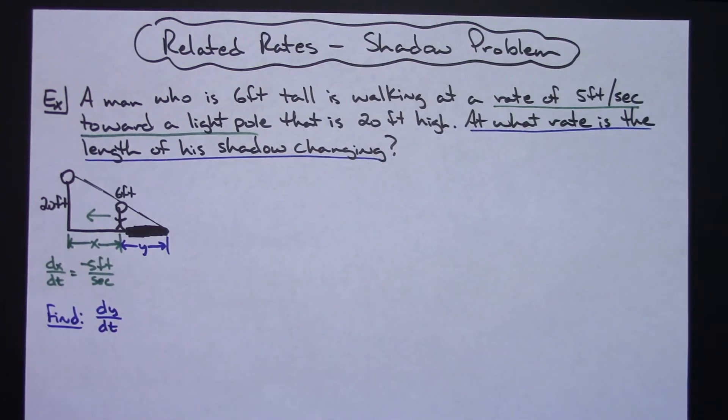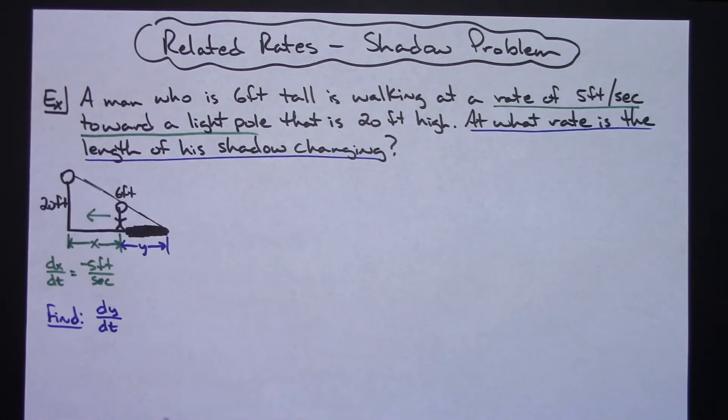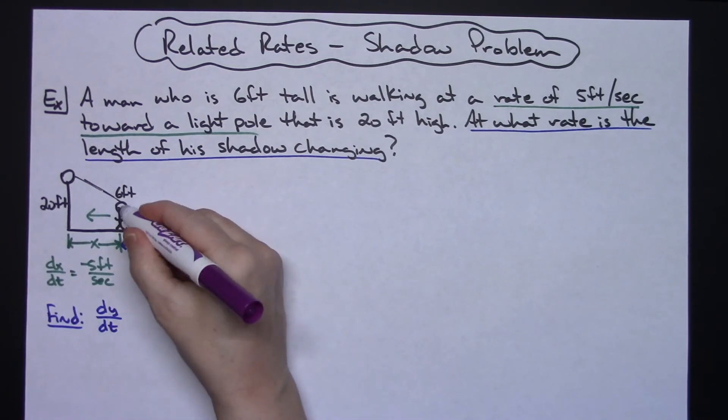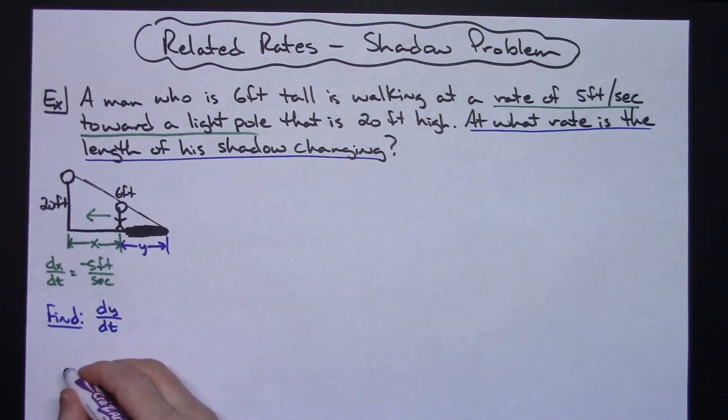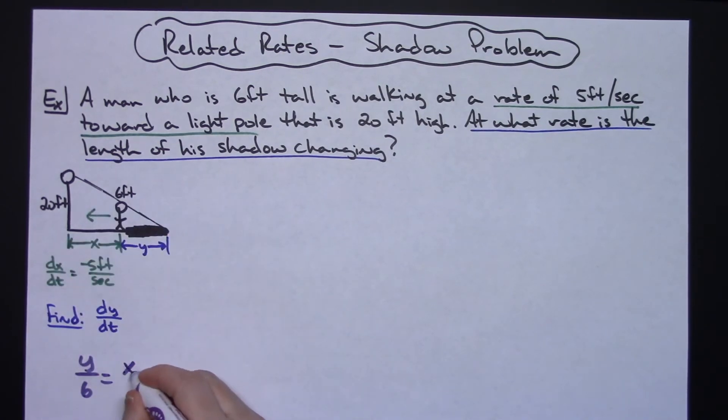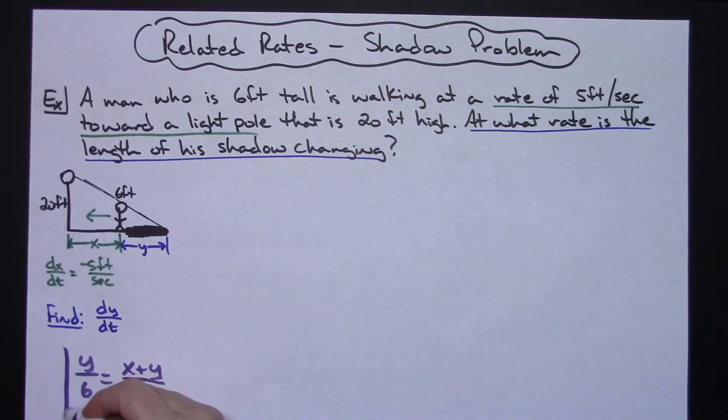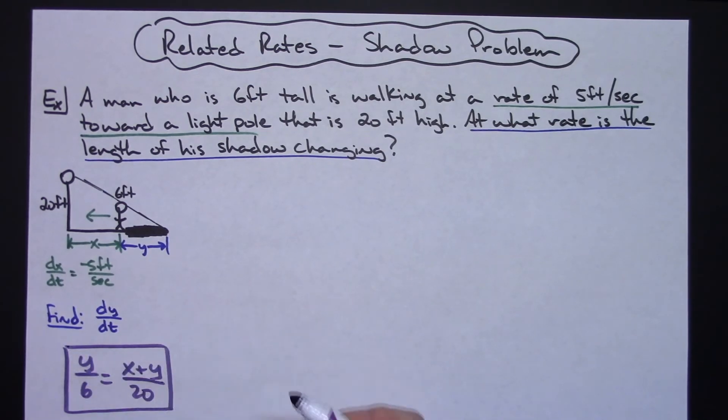Now we have to come up with a formula or an equation that we can use. Hopefully you can see you've got some proportional triangles here. Let's use the little triangle here and I can come up with y over 6 for the little triangle. Then the big triangle, this distance would be x plus y, and then all over a height there of 20. So there is going to be my geometric formula that I am going to work with to be able to finish this related rates problem.